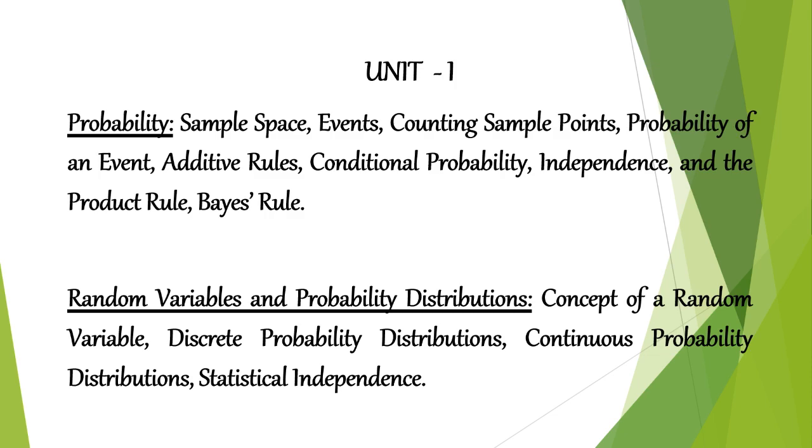And there are two major categories in random variables. One is discrete random variable and continuous random variable. So discrete and continuous random variables and distributions, we will see in detail. I have given nice examples. You will never forget the discrete and continuous. You can find out easily whether it is a discrete random variable or continuous random variable. I will give you examples later.